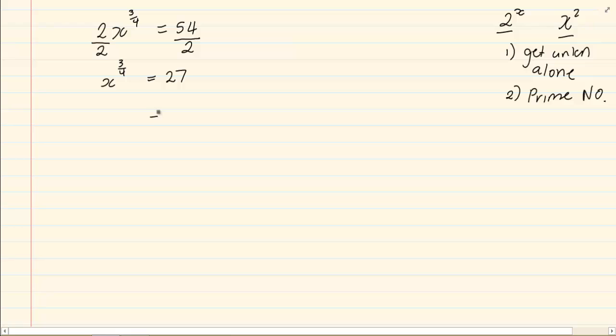In this case, 27 can break down to 3 to the power of 3. So we have x to the power of 3/4 is equal to 3 to the power of 3.